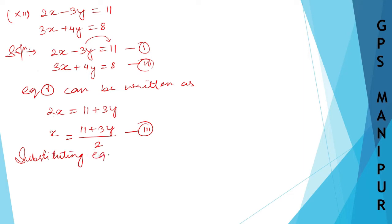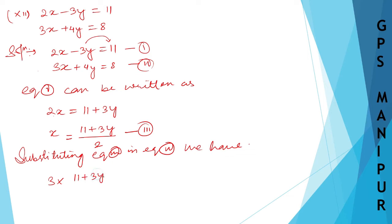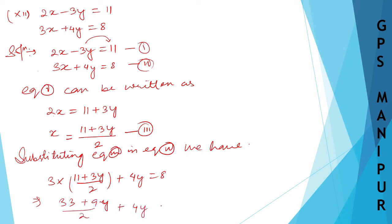Substituting equation number three into equation number two. Instead of x, we write 3 times (11 plus 3y) divided by 2, plus 4y, is equal to 8. That gives us 33 plus 9y divided by 2, plus 4y, is equal to 8.